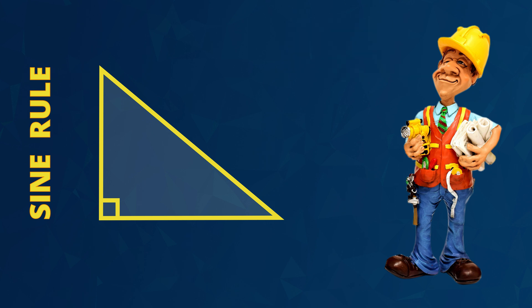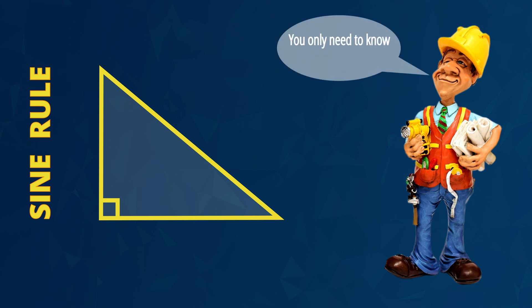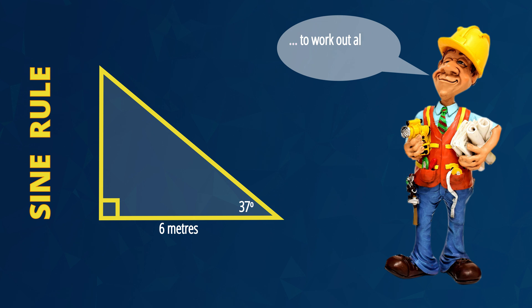The sine of an angle is a mathematical operation that is the ratio of two sides of a right angle triangle. That means that in any right angle triangle, all you need to know is two measurements — like the lengths of two sides, or one angle and one side — and then you can work out all of the sides and all of the angles in the triangle.